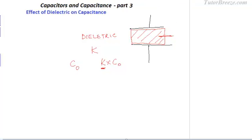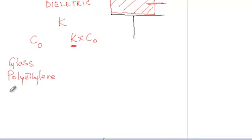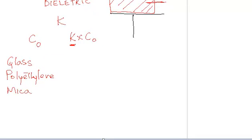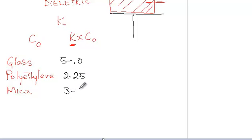I will give you some values of dielectric constants to give you an idea of how much the capacitance can change. For glass, the dielectric constant varies between 5 to 10. For polyethylene it is about 2.25, and for mica it is between 3 to 6.